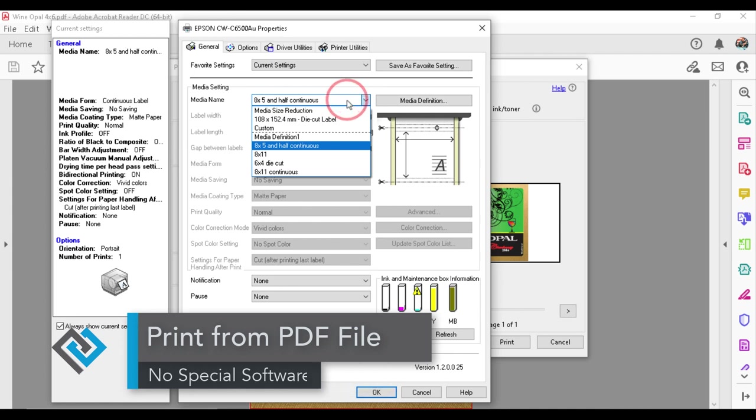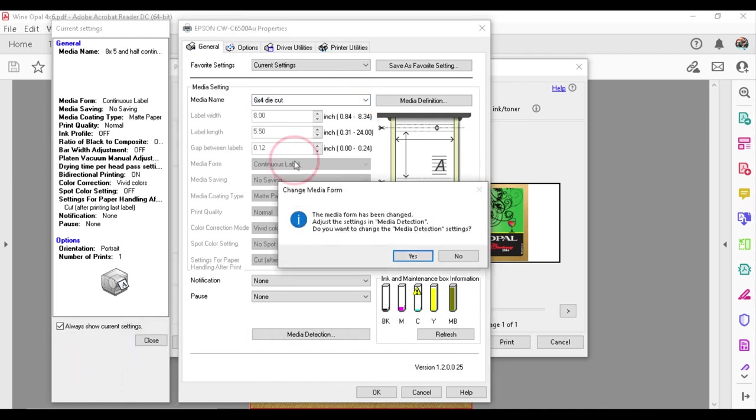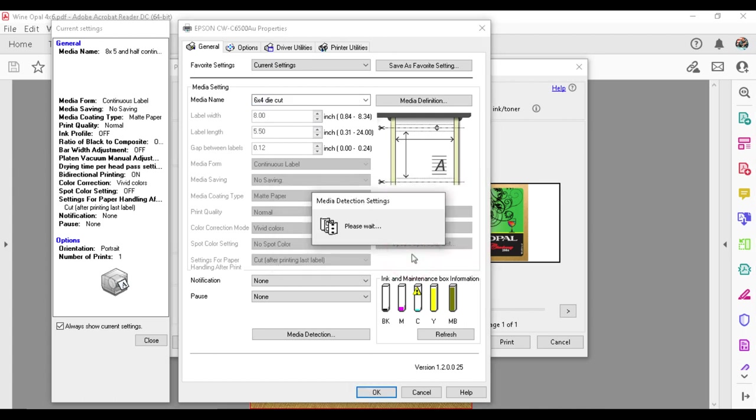So they're called media names. And I've already created one called six by four die cut. So this will have, now it's just asking me to double check my selections.